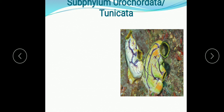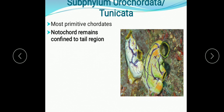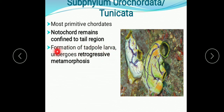We will start with sub-phylum Urochordata. Urochordata is also known as Tunicata. They are the most primitive chordates and notochord remains confined to the tail region. During their embryonic development, formation of tadpole larvae takes place. It undergoes retrogressive metamorphosis.